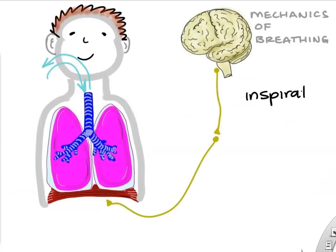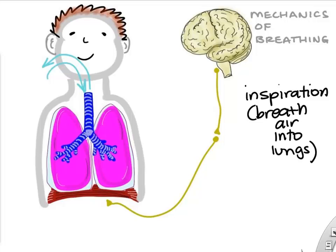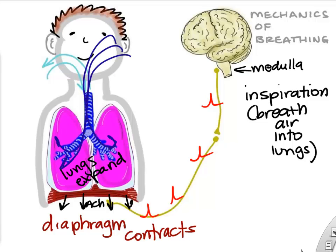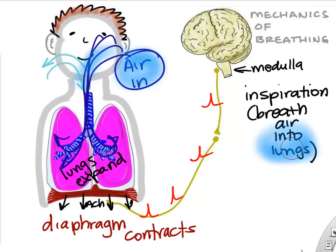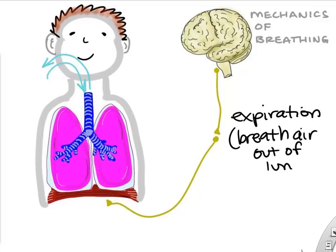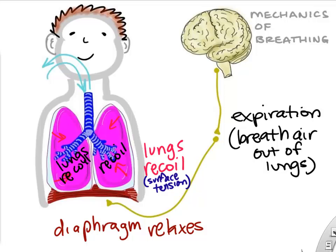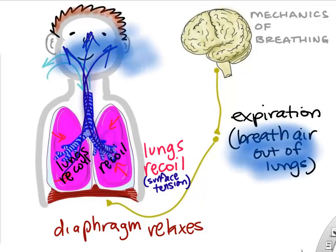Let's look at the mechanics of breathing — how do you actually ventilate and fill the lungs? To inspire, the medulla sends signals down your phrenic nerve, causing your diaphragm to contract. When your diaphragm contracts, the chest expands, the lungs expand, and air flows in. To breathe out, we simply stop contracting our diaphragm. The diaphragm relaxes, and more importantly, the lungs recoil due to surface tension and elasticity, creating airflow out of our lungs to the atmosphere.